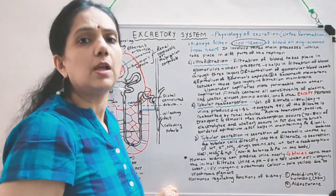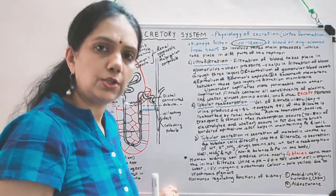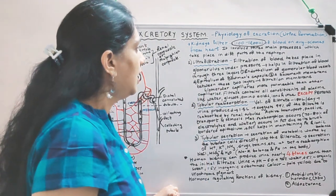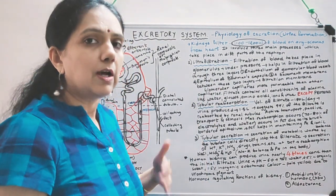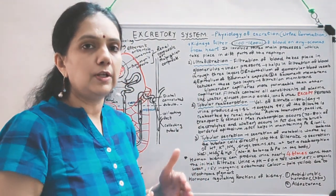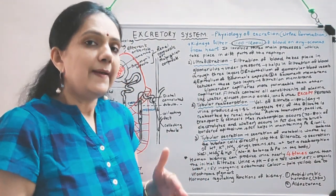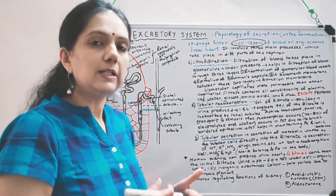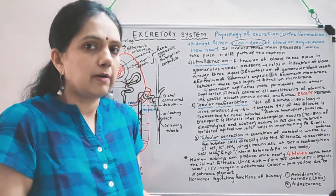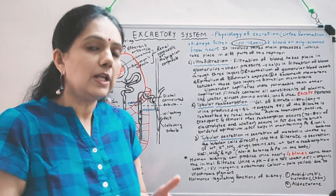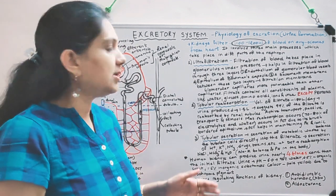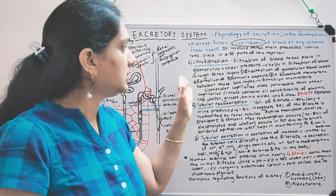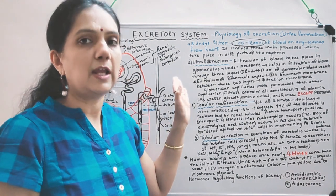The first step is glomerular filtration, or ultrafiltration. Filtration means to filter out, and 'ultra' means even finer — like ultramodern or ultraviolet rays. So ultrafiltration is very fine filtration.